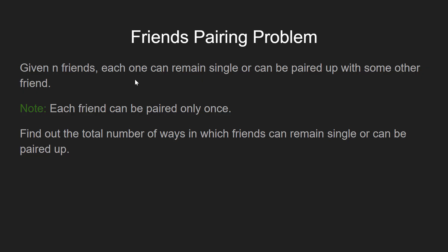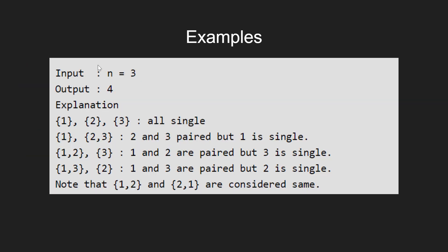Let's understand the problem with an example. If input n equals 3, there are 3 friends, and we can combine them in 4 possible ways.